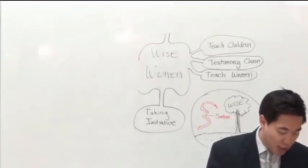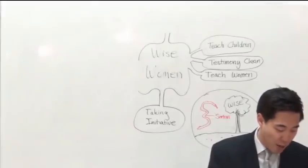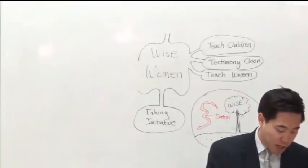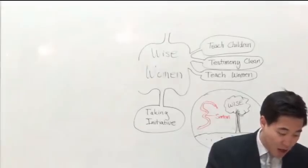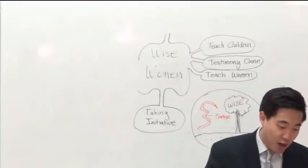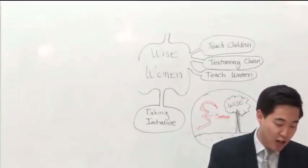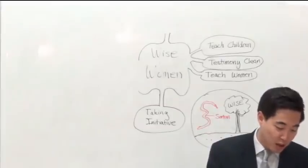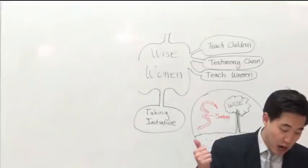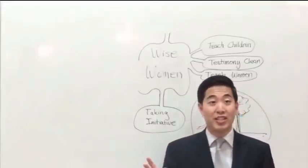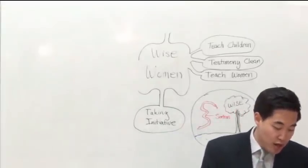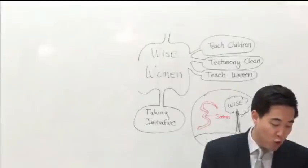2 Samuel 20, verse 16. 'Then cried a wise woman out of the city, Hear, hear, say, I pray you unto Joab. Come near hither that I may speak with thee.' Look at verse 18. 'Then she spake, saying, They were wont to speak in old times, saying, They shall surely ask counsel at Abel. And so they ended the matter. I am one of them that are peaceable and faithful in Israel. Thou seekest to destroy a city and a mother in Israel? Why wilt thou swallow up the inheritance of the Lord?' So then, verse 20, 21, Joab said, Okay, I won't destroy the city if you do such and such. So what did the woman do at verse 22? Then the woman went unto all the people.